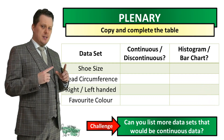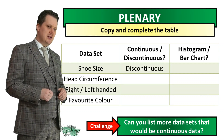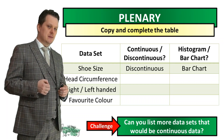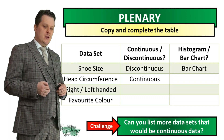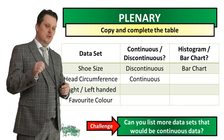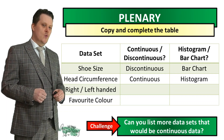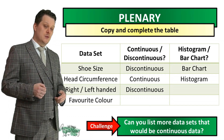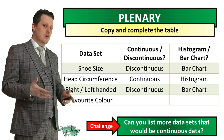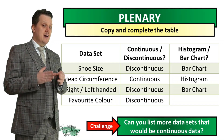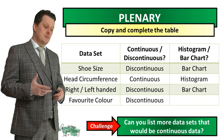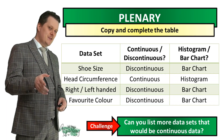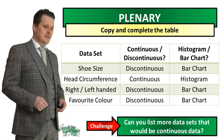Let's go through the answers. Shoe size is discontinuous data — you cannot have any value between the smallest and largest shoe size — so we plot it as a bar chart. Head circumference is continuous data — we can have any value between the smallest and largest — so we plot it as a histogram. Whether someone is right or left handed is discontinuous data because there are only two groups, so we use a bar chart. Favourite colour is also discontinuous data with a limited number of groups, so again a bar chart. If you thought of any more continuous data sets, I'd like to hear about it in the comments below. That brings us to the end of our lesson — see you next time.